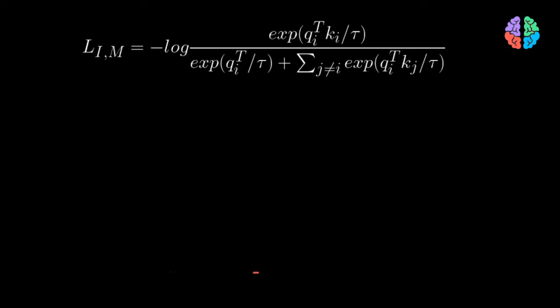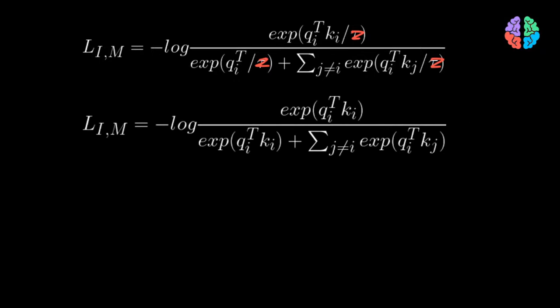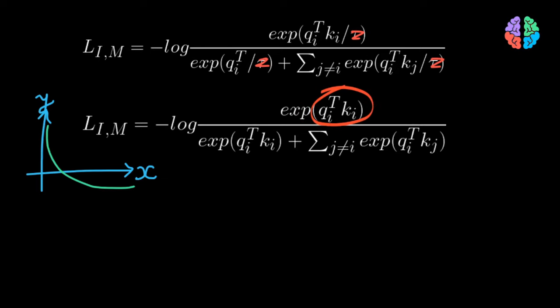The InfoNCE loss function is just a modified cross-entropy loss, though it looks a bit scary in the paper. It extends the idea of contrastive learning to multiple modalities. To understand it, I'm going to simplify it by first stripping off the temperature tau, which is trivial, resulting in a simplified equation. During training, we optimize this loss to achieve a minima. The loss is a negative log function, and a plot of negative log looks somewhat like this, which indicates that in order to minimize Y, we need to achieve higher values of X. This means we need to increase the numerator and decrease the denominator as much as we can.